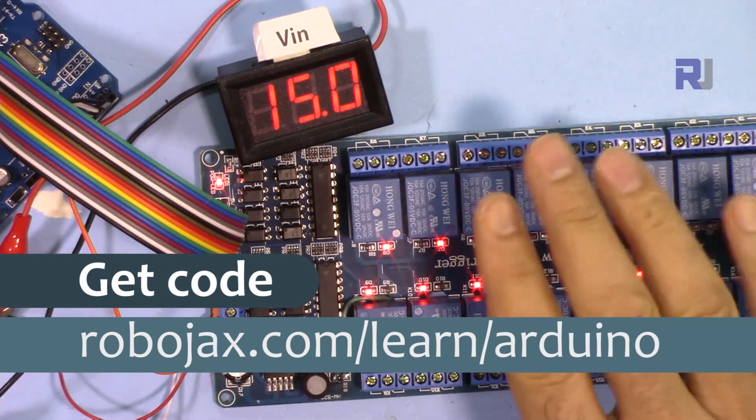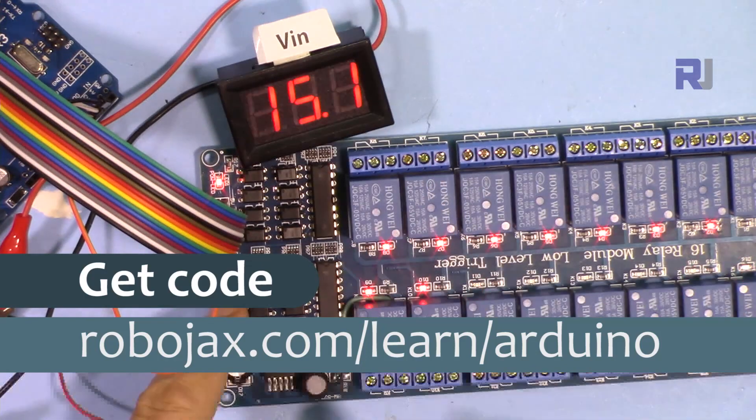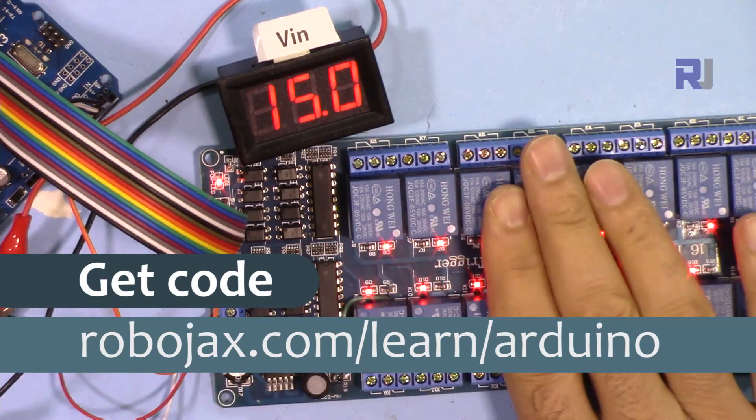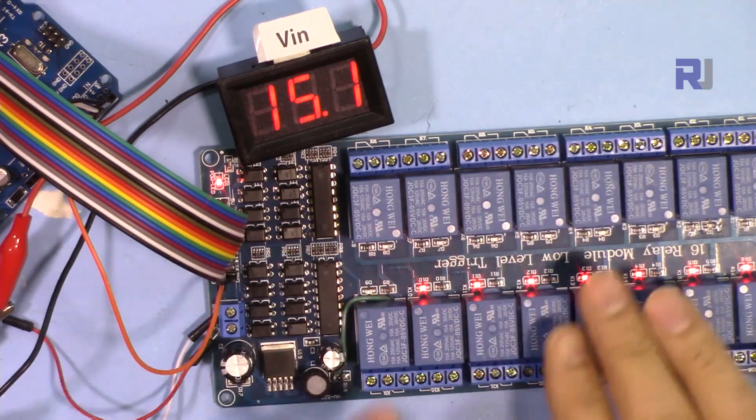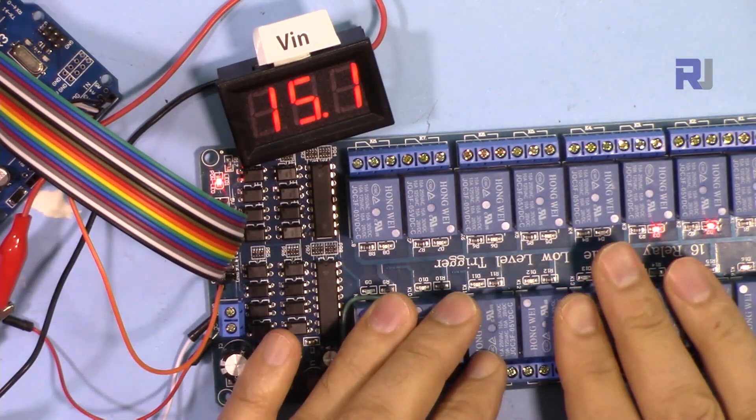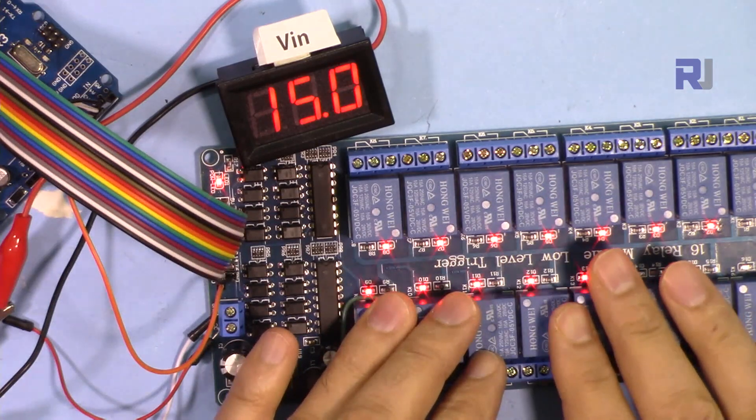As you can see, I fixed this. Now input is 15 volts and the regulated voltage for these relays is 5 volts, and they are working normally with the rated voltage. Let's get started with this.